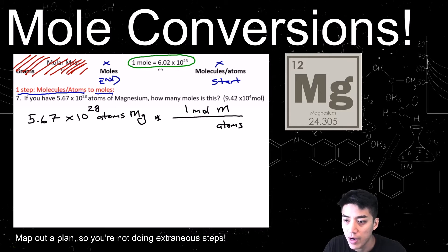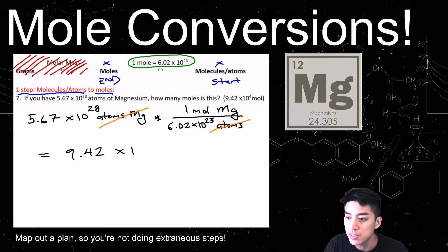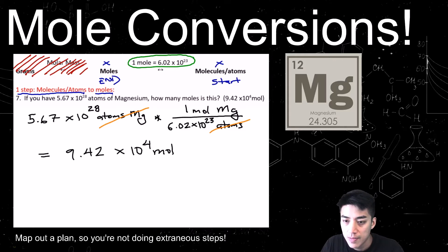Write 1 mole of magnesium on top. Then ask yourself: 1 mole is how many? That number is always 6.02×10²³. So the atoms cancel out. Put this in the calculator — remember to use parentheses like we discussed in unit 2. The answer is 9.42×10⁴ moles.